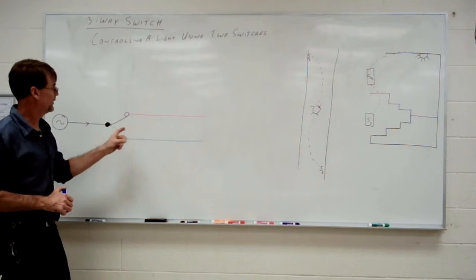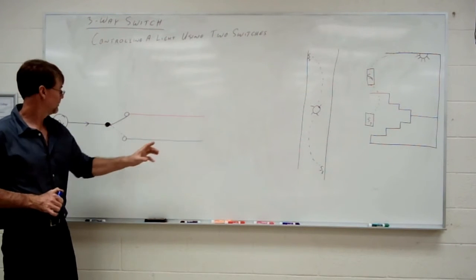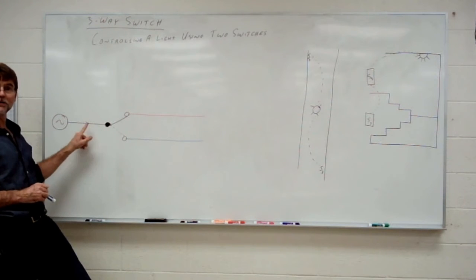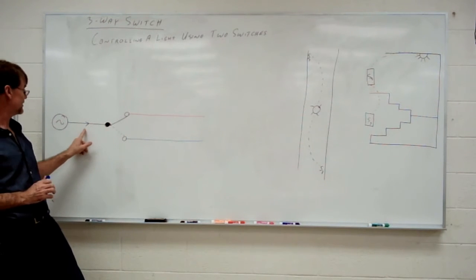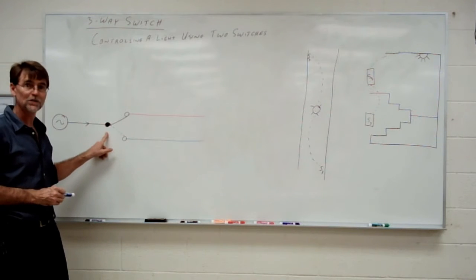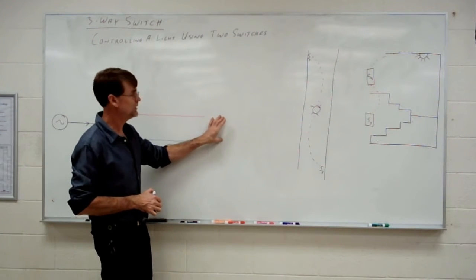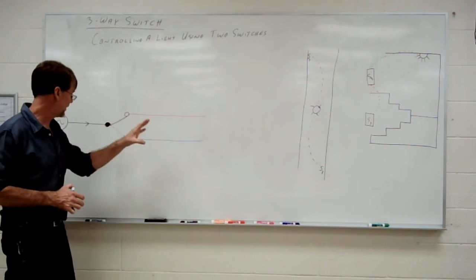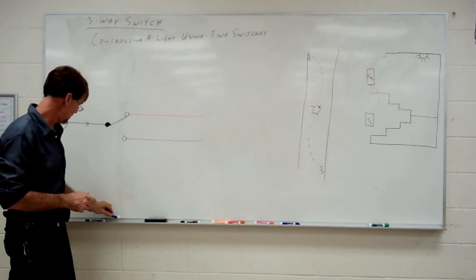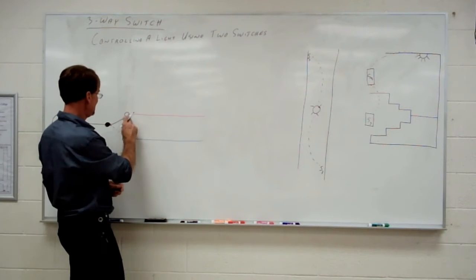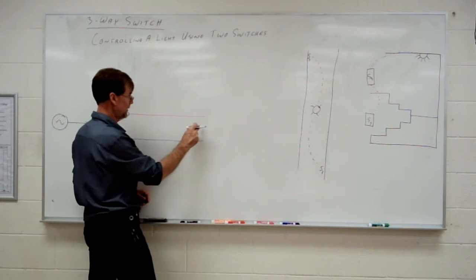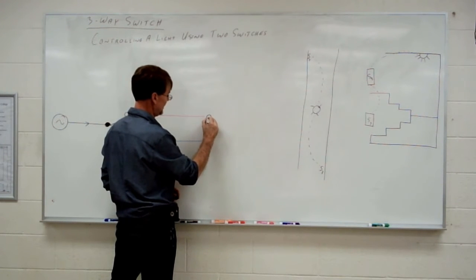The second one, we're going to turn it around. So the common here, I call it the input. The common is the line side of this switch. The second three-way switch, however, when we pair these up, is going to get turned around so that these two other terminals become the line side.